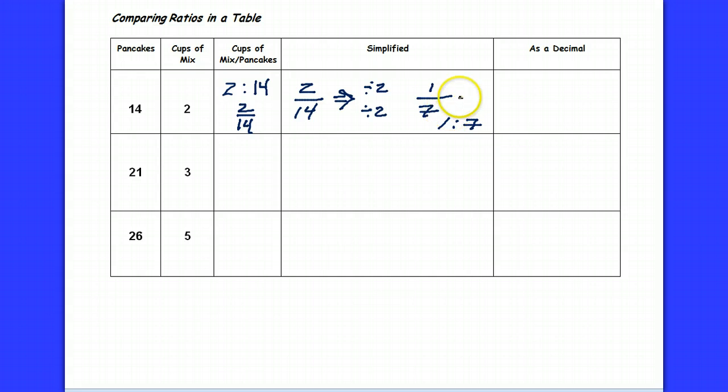As a decimal, I can find out what the value of 1 over 7 is by looking at 1 over 7 as 1 divided by 7. That's another way we can write this. Mathematically that means 1 divided by 7.